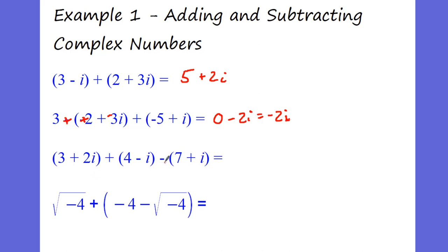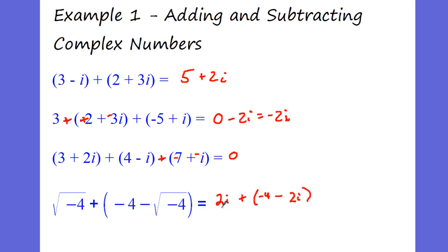This next one — again, if you have a negative, distribute that negative to everyone in here. Now look at all your real numbers: 3 plus 4 is 7, minus 7, that's 0. We have 2i minus i, that's 1i, minus i — that ends up becoming 0 overall. Then we have the square root of negative 4, that's 2i, plus negative 4 minus the square root of negative 4, that's 2i. So here we have 2i minus 2i, that cancels each other out, and we're left with negative 4 — a real number.